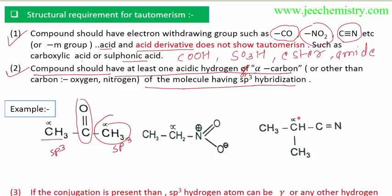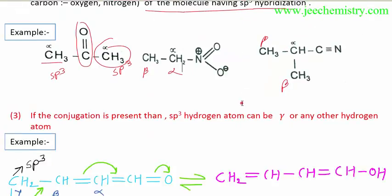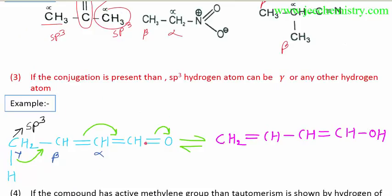This one is sp3 hybridized, this one also sp3 hybridized. Here is the alpha carbon, this is beta, this would also be beta — alpha, beta, alpha, beta. The alpha carbon atoms must be sp3 hybridized and have at least one hydrogen atom. If conjugation is present, there is a possibility that other than alpha hydrogen atoms can also participate in tautomerism. Here I have a small correction — only a single bond is present here.